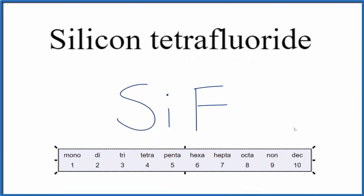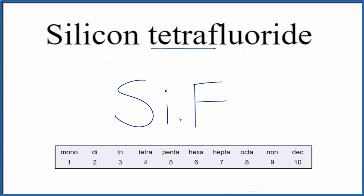If we look at this table here of prefixes, tetra means four, so we're going to have four of these fluorine atoms. So we're going to put a four here, and that makes the formula for silicon tetrafluoride SiF4.